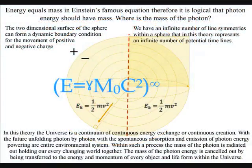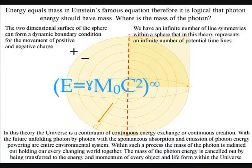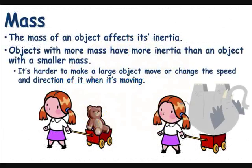You could say that the mass of photon energy is cancelled out by being transferred to the energy and momentum of every object and life form within the universe. This can be seen if we look at the nature of mass.